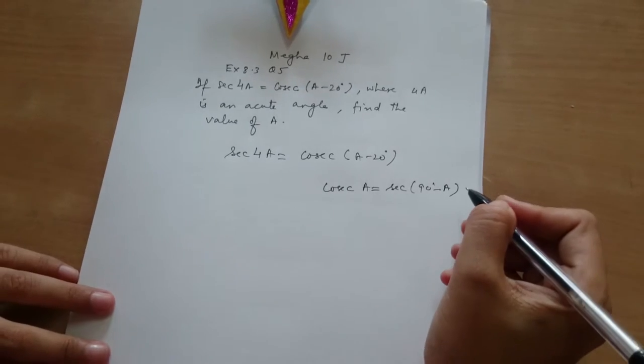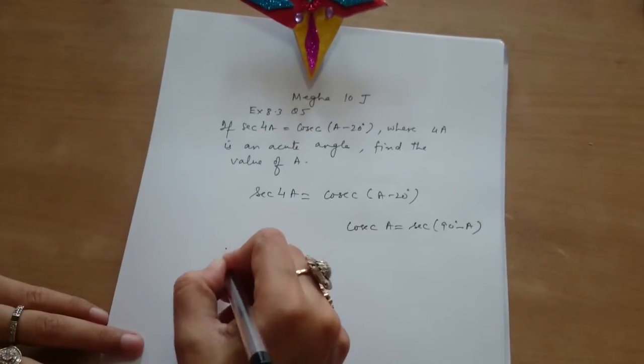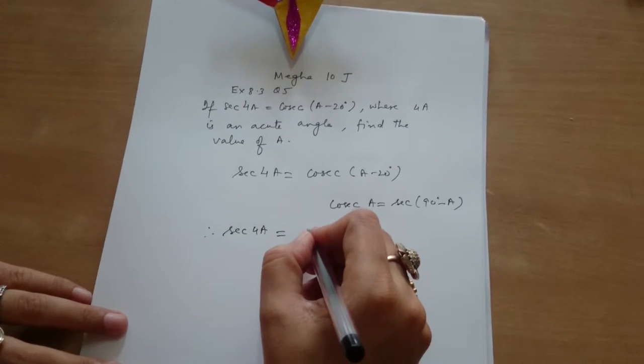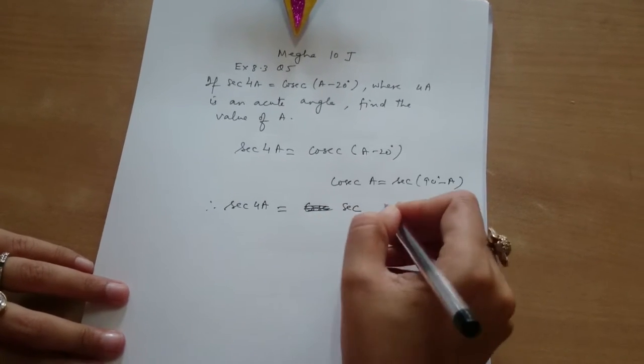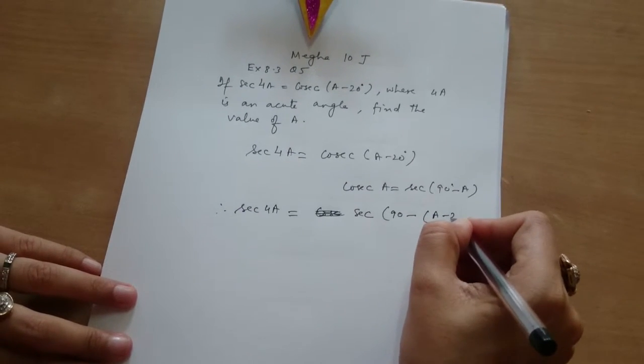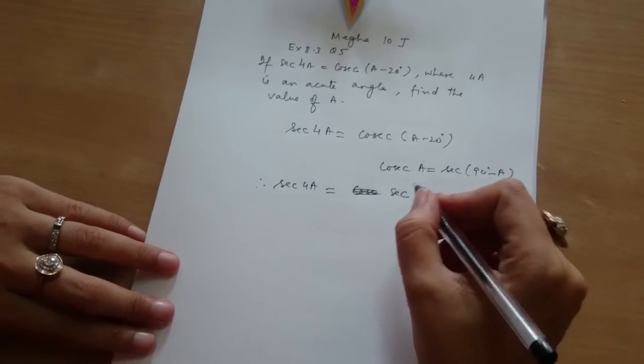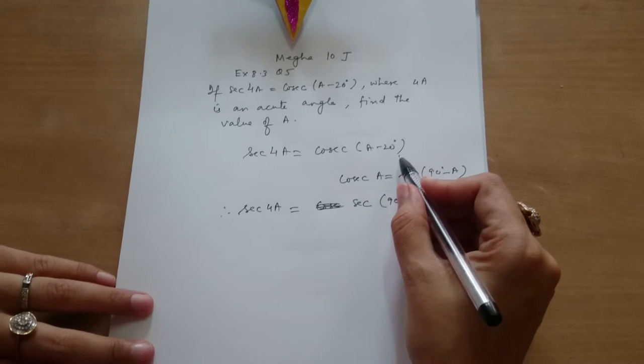90 degrees minus a. We will get secant 4a equals to—cosecant a minus 20 degrees, I am first writing like this. So secant 90 minus theta is cosecant theta.